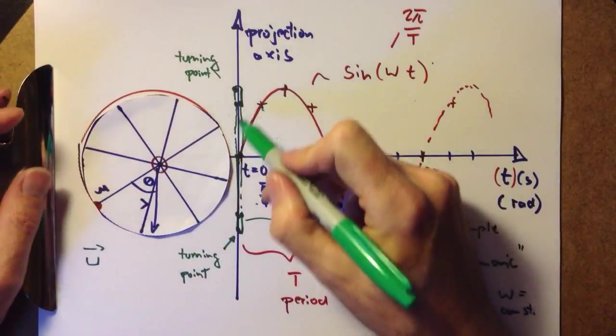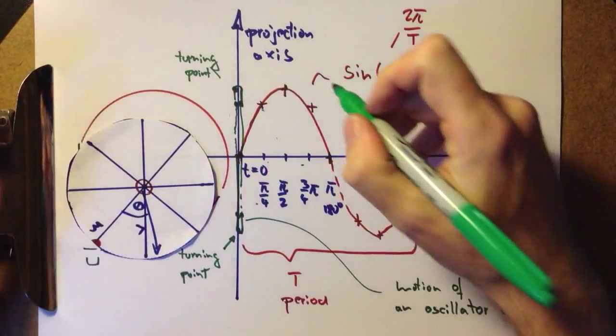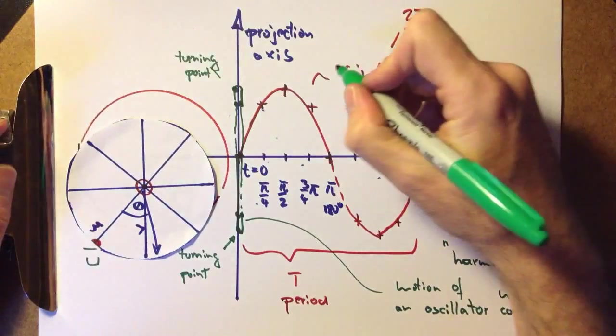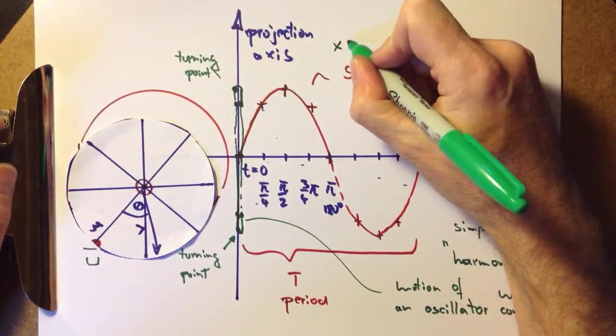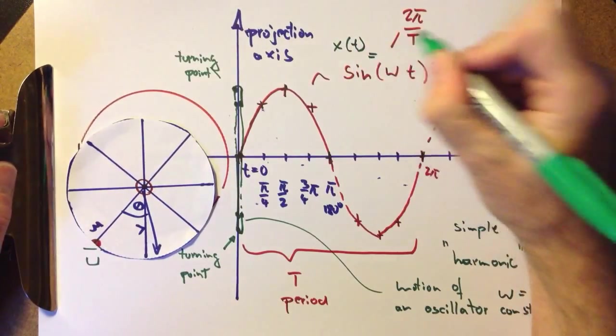And the sine function here has been plotted out nicely. That's for the position. So the position on the projection axis is equal to x of t equals sine of ωt.